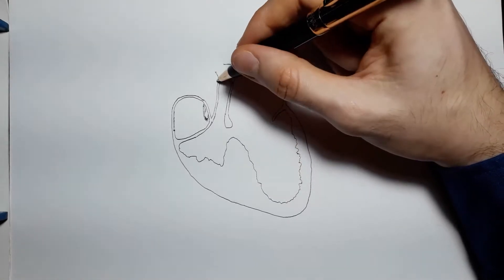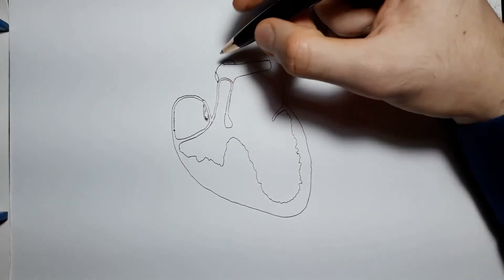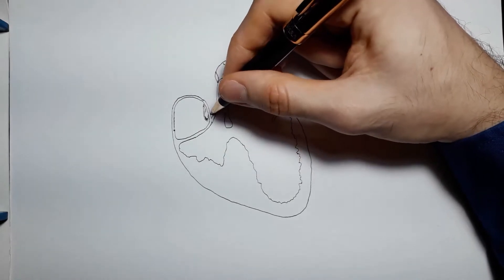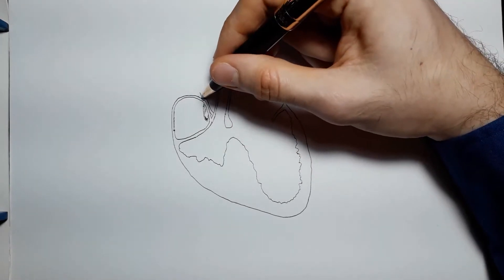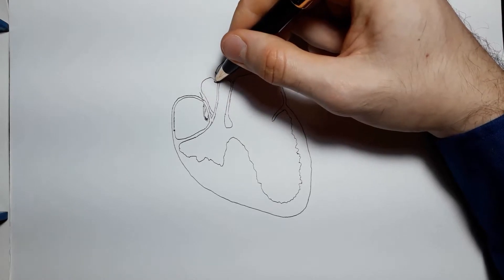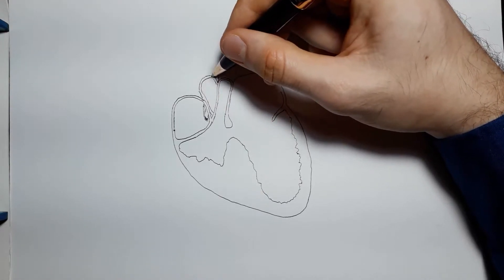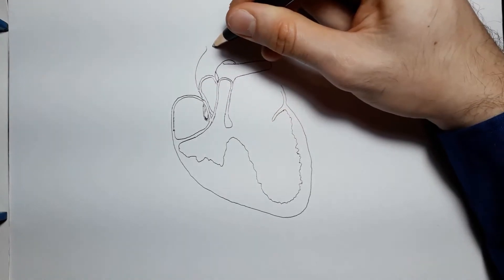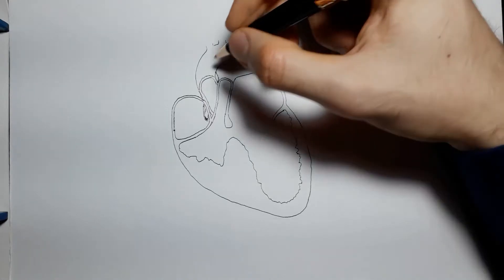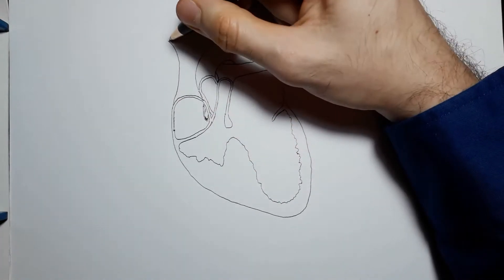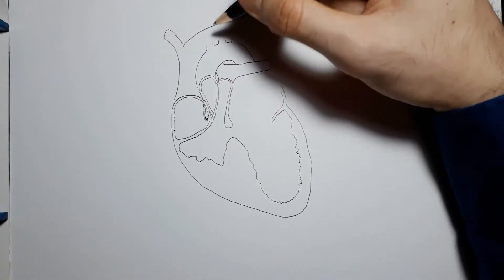If the tricuspid leaflets fuse partially, you may develop tricuspid stenosis. However, if there is complete fusion of the developing valve leaflets, you will develop tricuspid atresia, as the fused leaflets completely block the right atrial outflow.